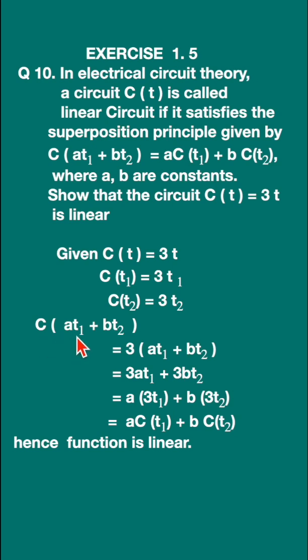C at at₁ + bt₂. C at t is 3t. So this t is replaced with at₁ + bt₂. So here also we should replace. So let us write down: C(at₁ + bt₂) = 3(at₁ + bt₂). This t I have replaced with this. So this t also I am writing the same thing.